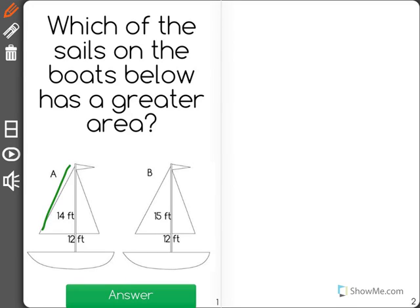Well, we can see that both the sails are triangles, and the area of a triangle is one-half its base times its height.